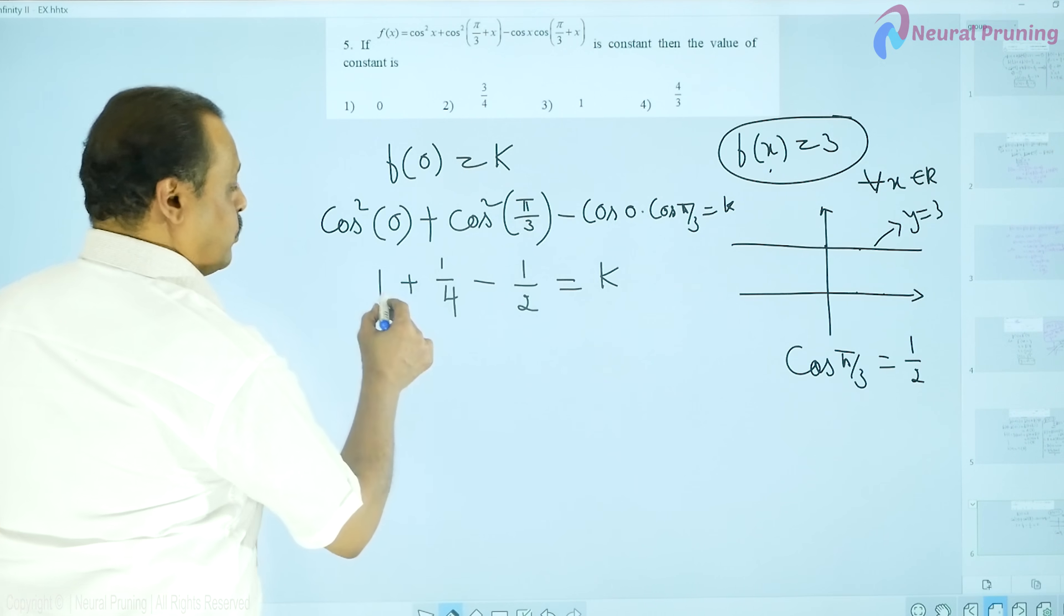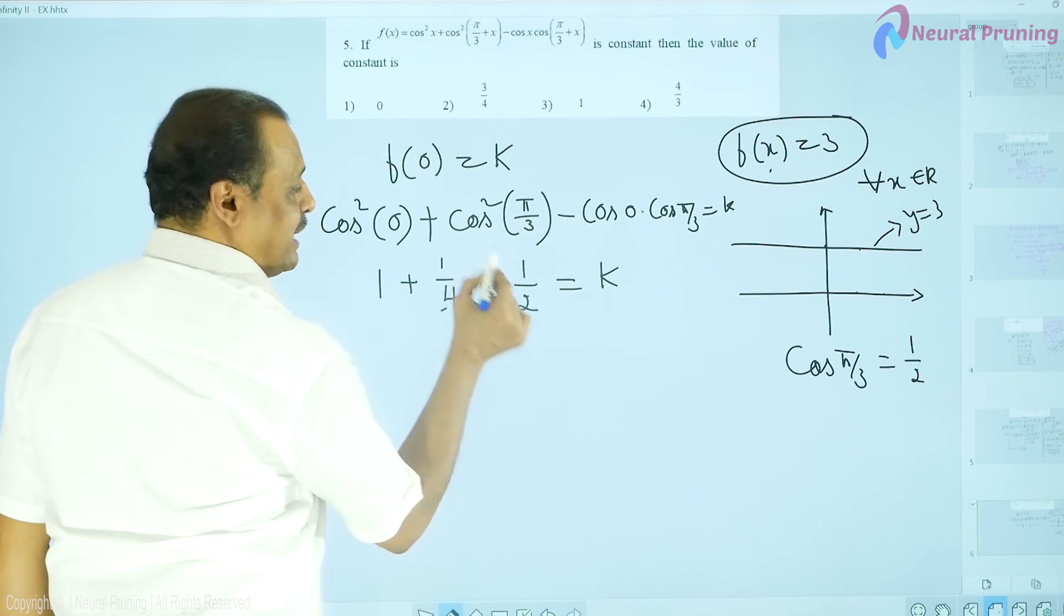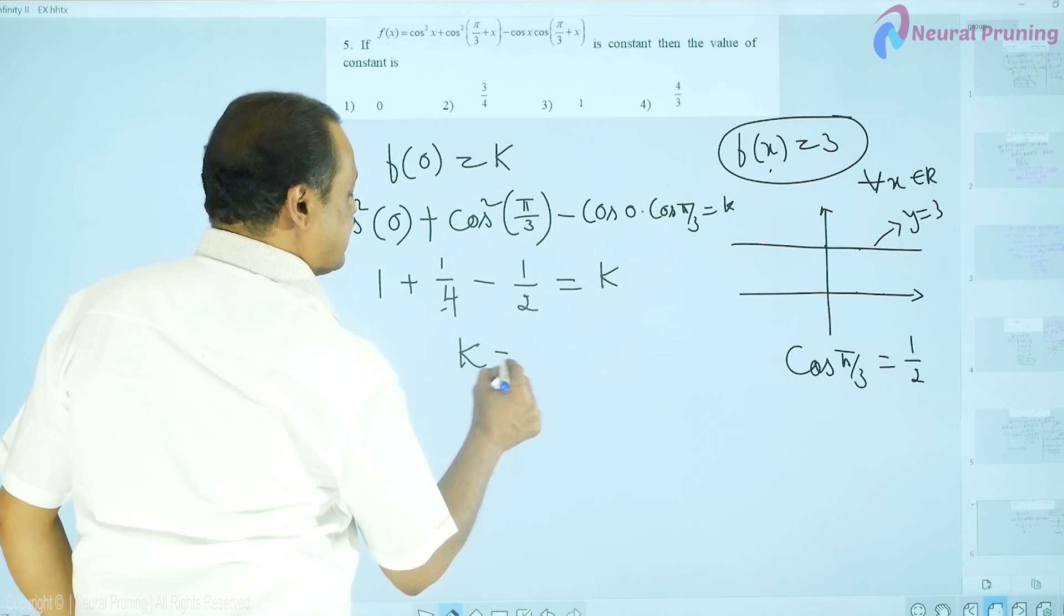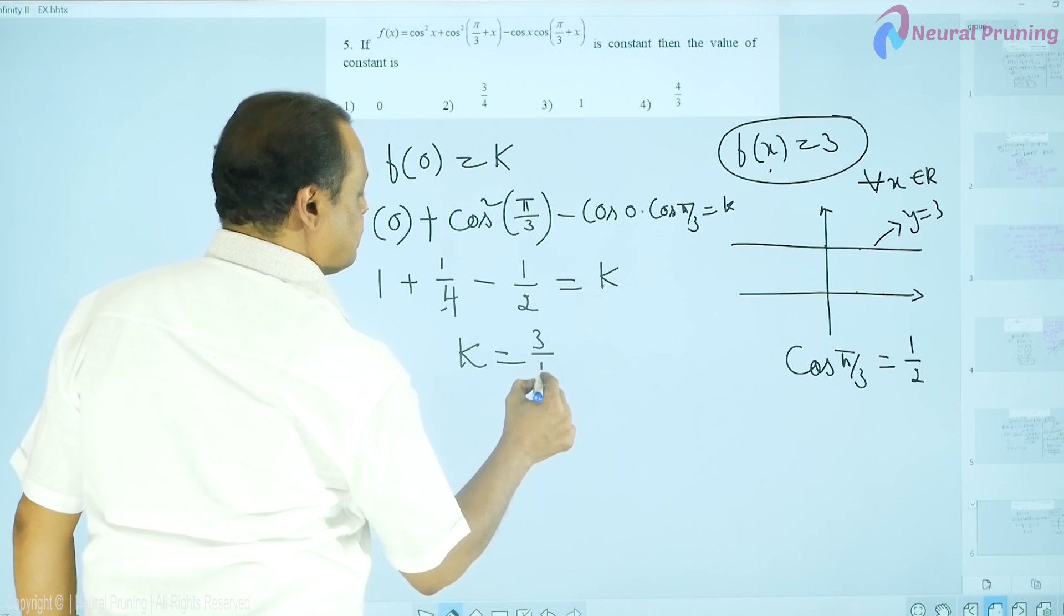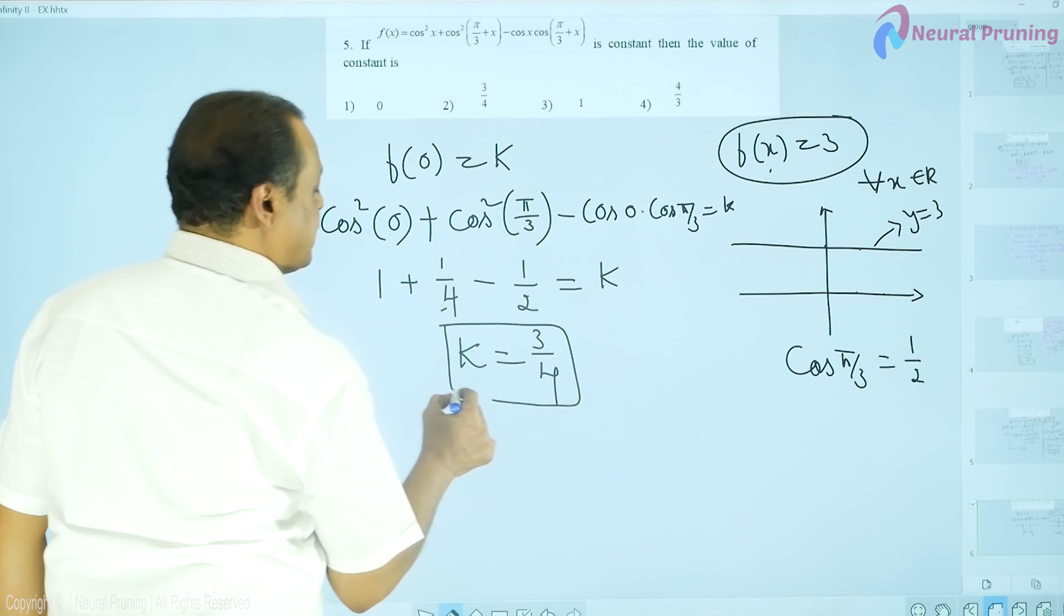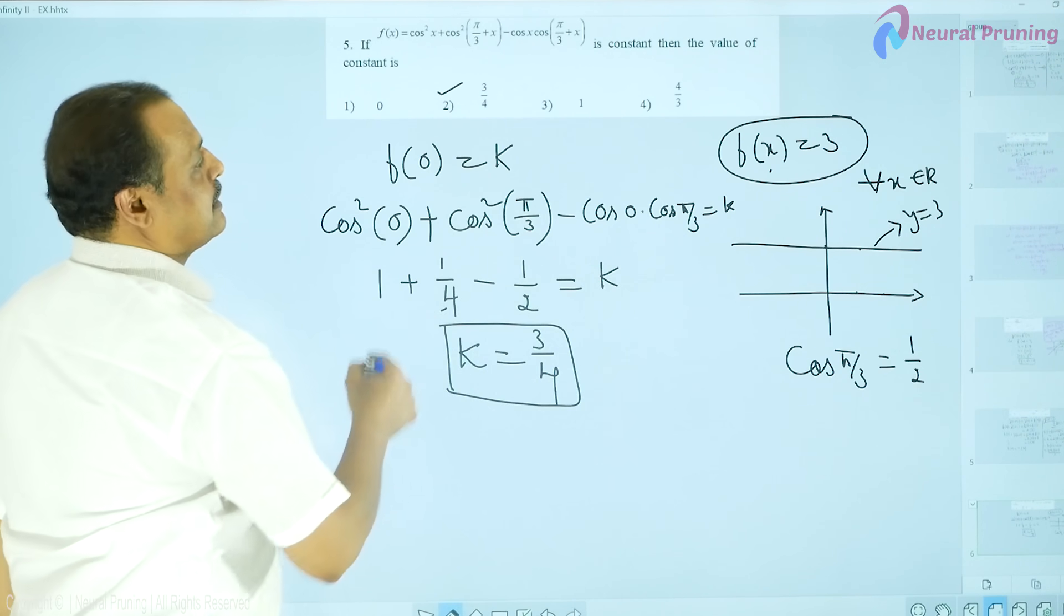So, what is the value of k now? 1 plus 1 by 4, it is 5 by 4 minus 1 by 2. So, I think I will be getting this as 3 by 4. k value, it is nothing but 3 by 4. The answer is obtained.